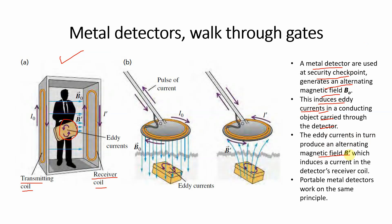یہ eddy current اپنا ایک alternating magnetic field B' produce کرتا ہے، which induces a current in the detector's receiver coil۔ اب دو fields ہوں گے: ایک B₀ field اور ایک B' field۔ یہاں سے detector اس کو detect کر لے گا جہاں magnetic field کی magnitude change ہو رہی ہے — اس کی indication آ جائے گی جب کوئی metal object اس کو traverse کرے گا۔ Portable metal detectors work on the same principle۔